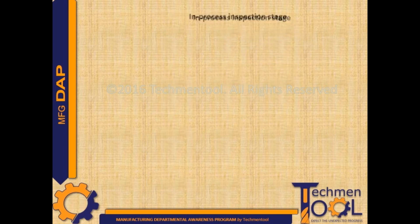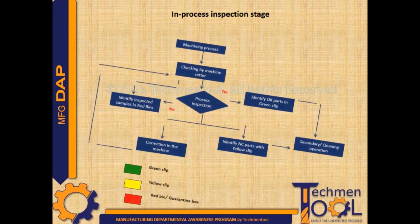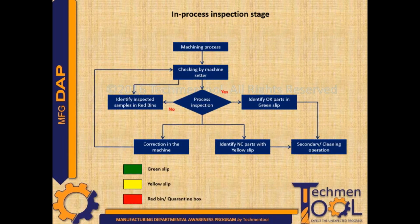This is the sample flow chart for NC handling at the in-process inspection stage. Here, if any NC products are identified during process inspection at regular time intervals, they are placed in red bins. OK parts are identified with a green slip, and deviated parts are identified with a yellow slip. The status of yellow slip parts is decided at the final inspection stage.